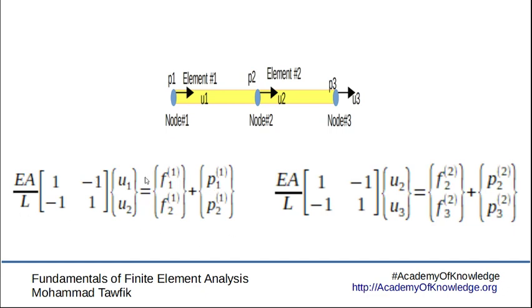Now, you can see from the equation of the first element that it contains u1 and u2, while the equation of the second element contains u2 and u3. So u2 is common. Also we have p2 divided between the two elements, p21 here and p22. We don't know how much of p2 is carried by element 1 or how much of p2 is carried by element 2. However, we know that the summation of these two parts will have to equal the input force p2 that we have here.